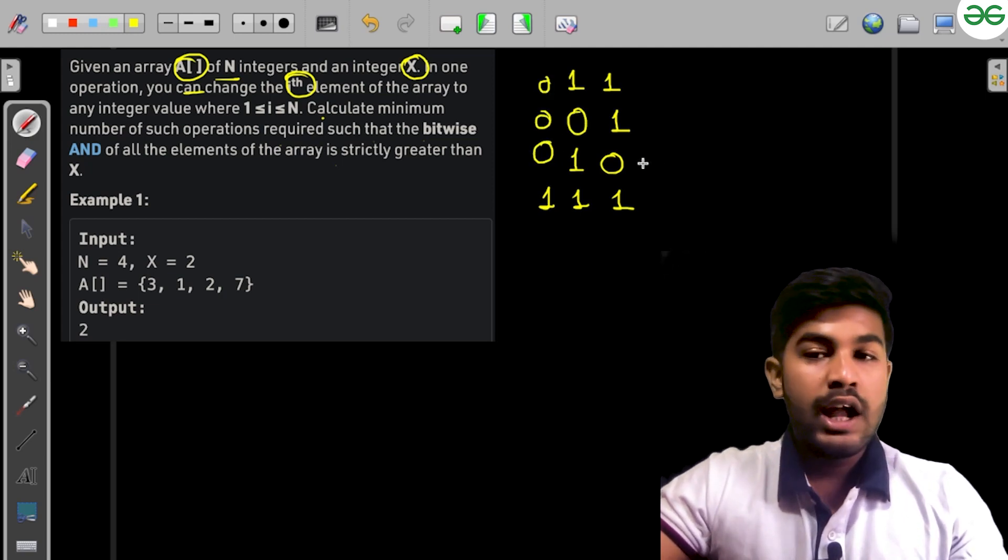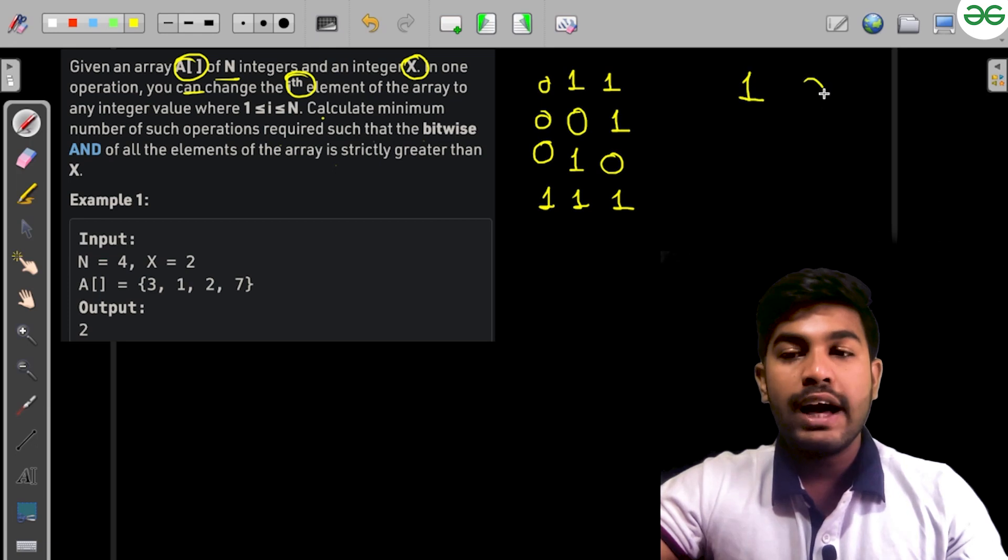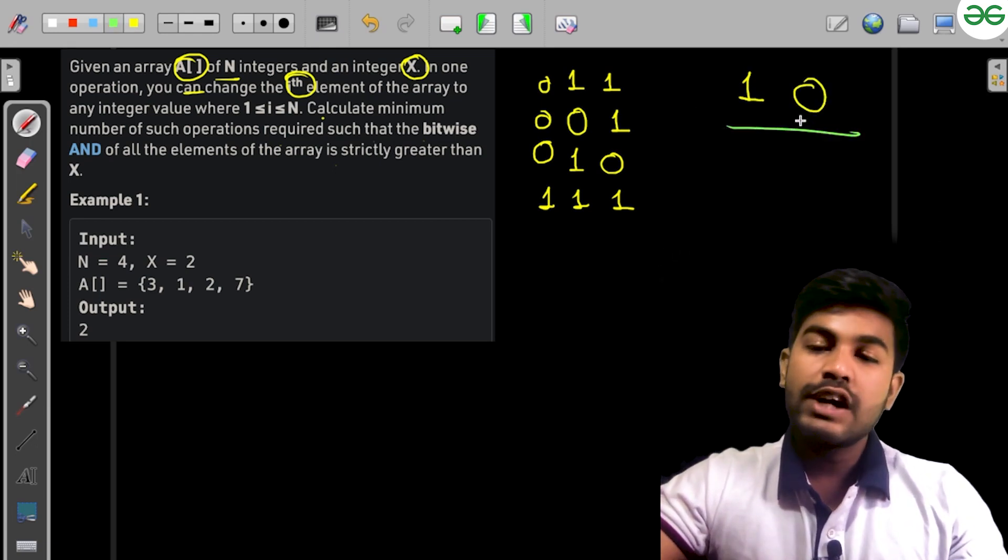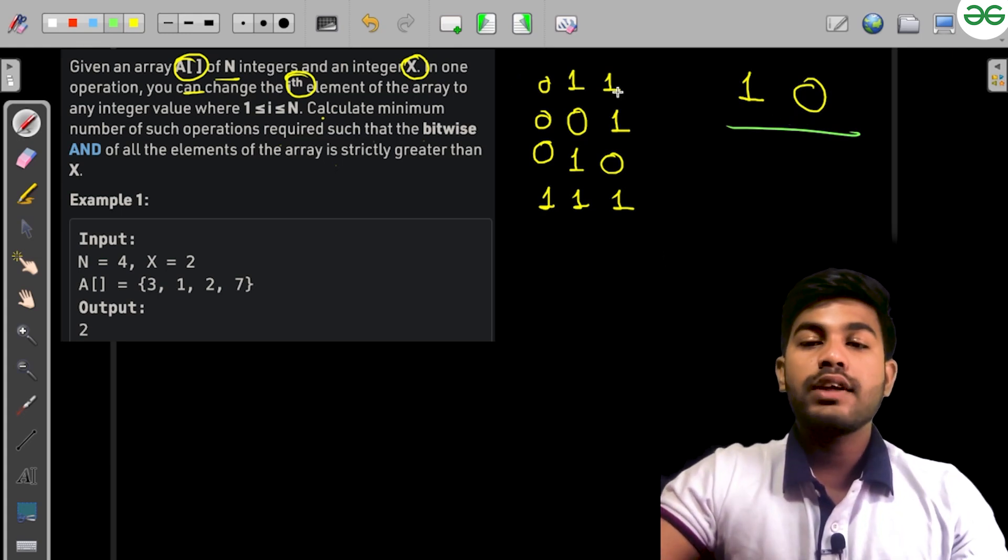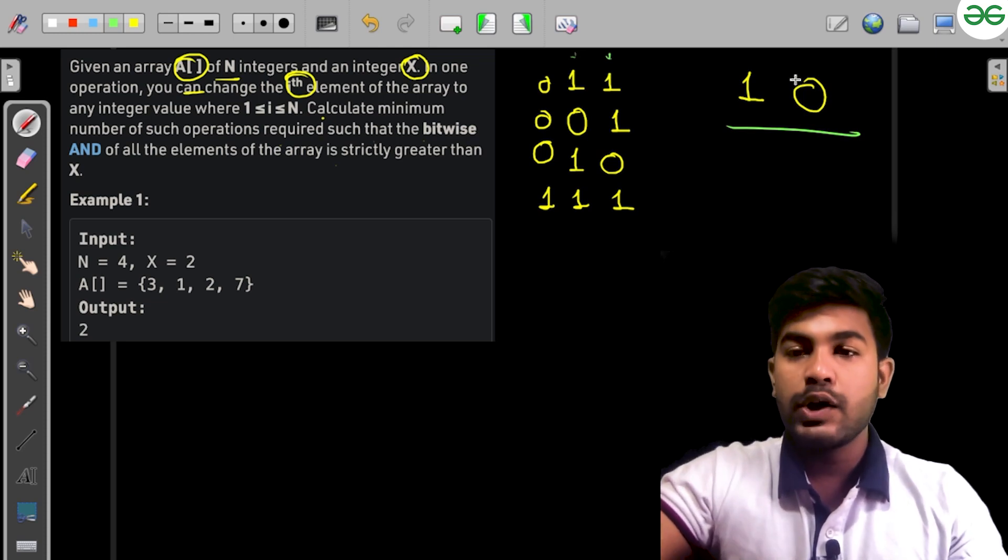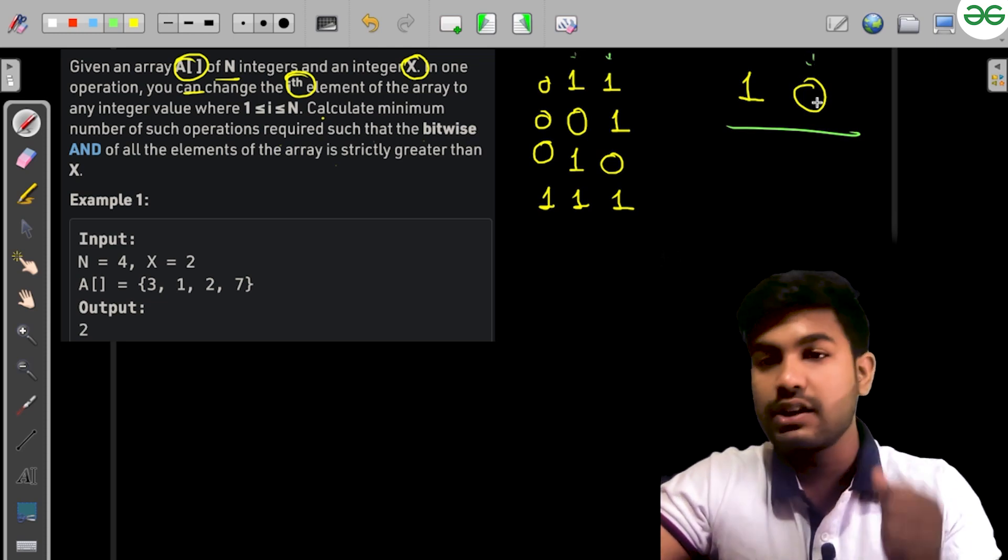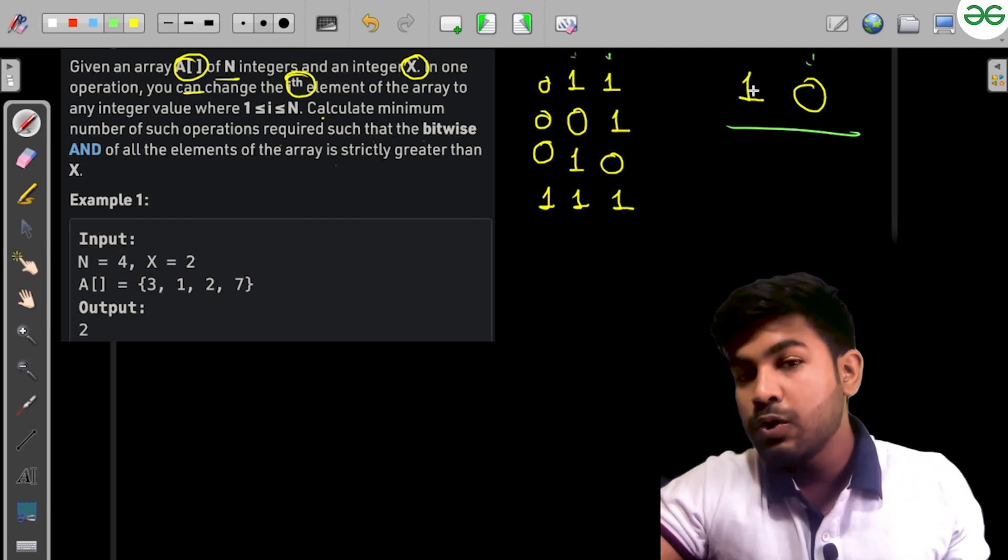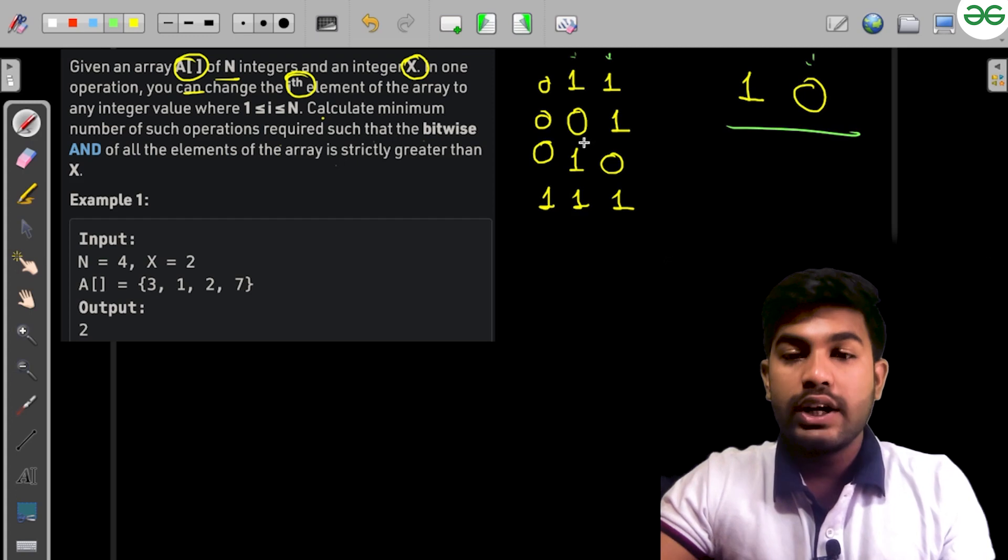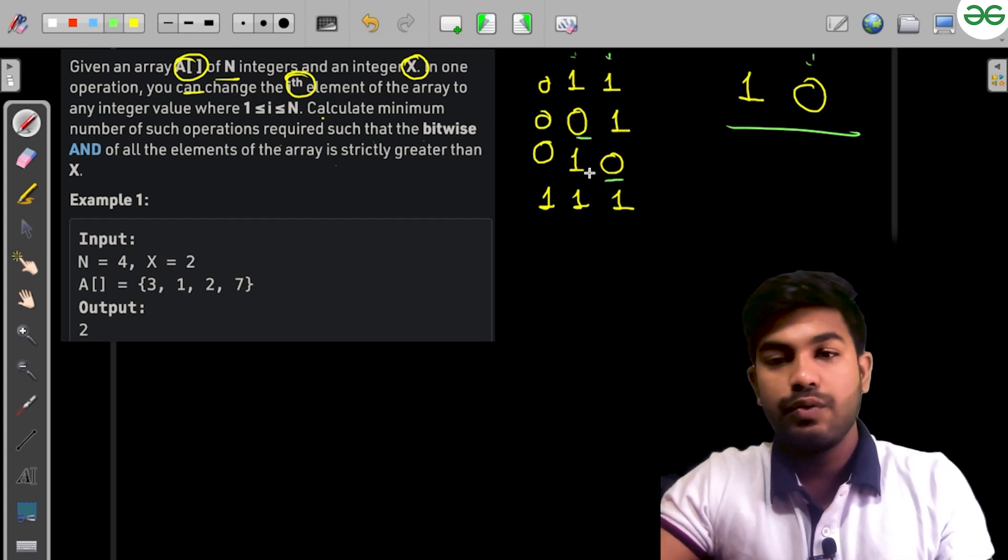We want a value greater than this value (2 in binary: 10). We can set certain bits to make it 3 (11 in binary), which is greater than 2. This fulfills our requirement—two bits need to be set.